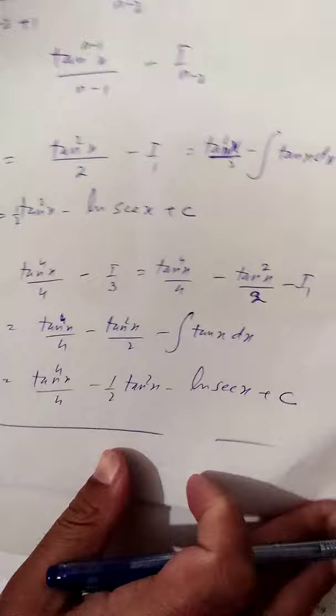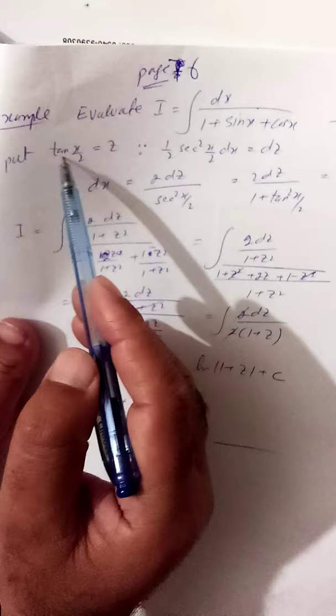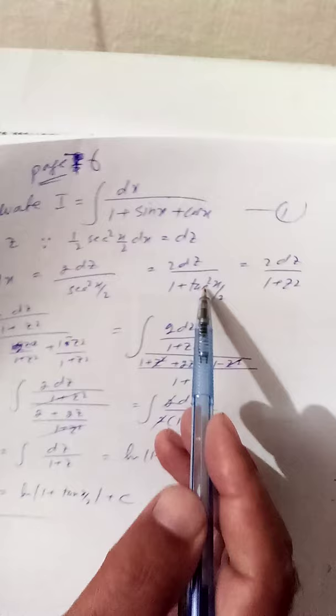Now using the magic substitution to evaluate this trigonometric integration: the integral of dx over (1 + sinx·cosx). We put the substitution tan(x/2) = z, so we get (1/2)·sec²(x/2) dx = dz, and rearranging gives dx = 2dz / sec²(x/2) = 2dz / (1 + tan²(x/2)) = 2dz / (1 + z²).